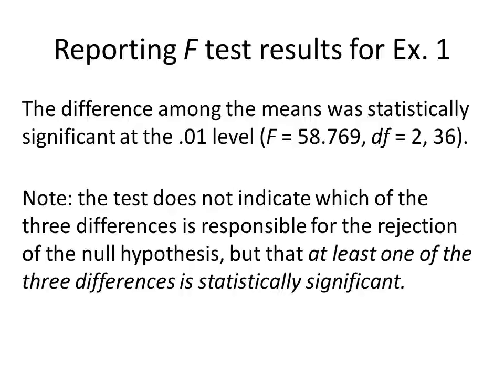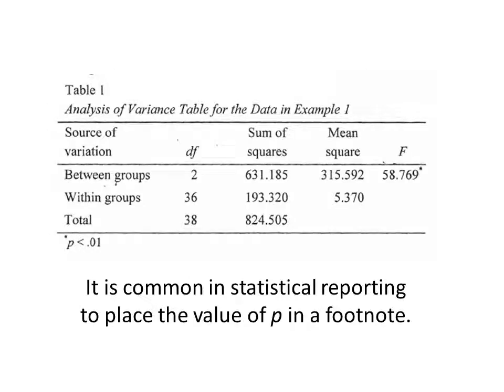The test does not indicate which of the three differences is responsible for the rejection of the null, but at least one of the three differences is statistically significant. Let's look at example three, table one on page 128. This shows another way to report the results of F-tests conducted with ANOVA — called an ANOVA table. The table shows the same values of F, degrees of freedom, and P that were reported, as well as the sum of squares and mean squares.